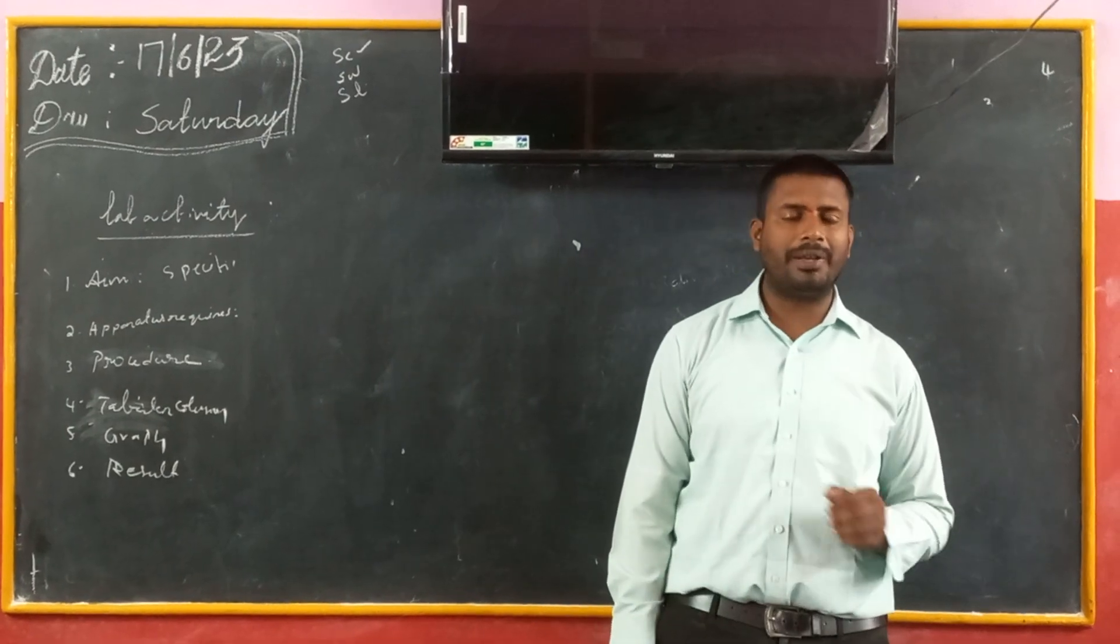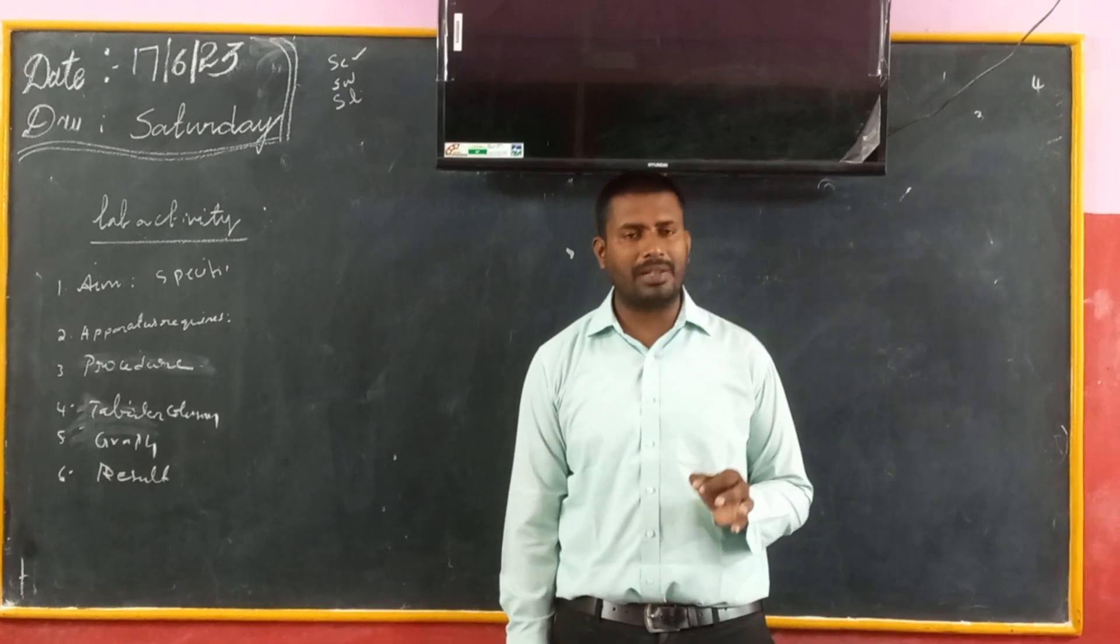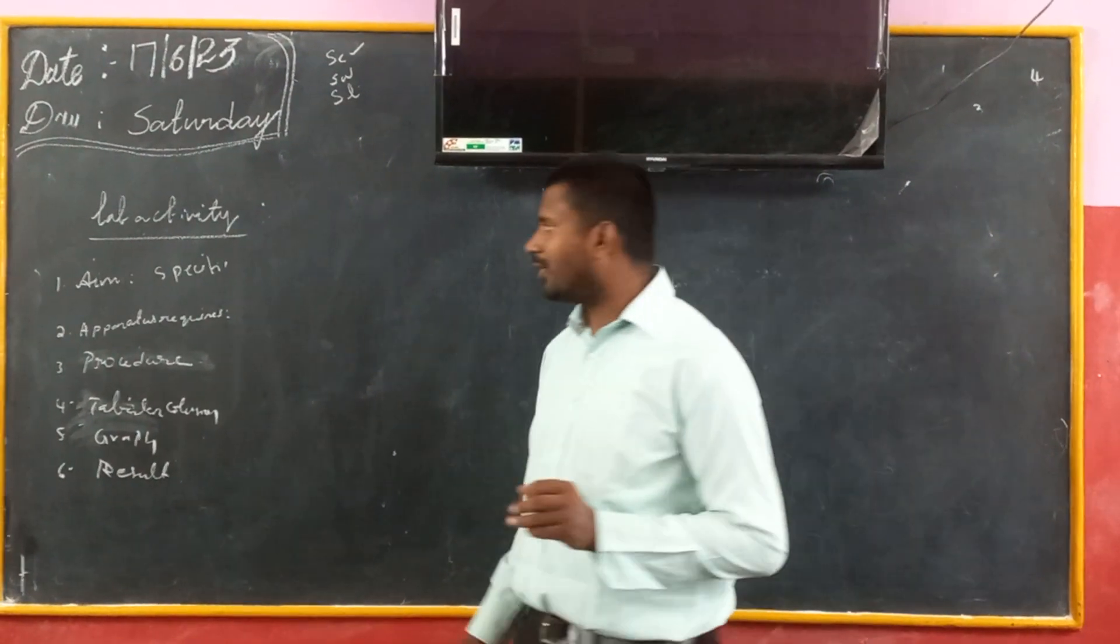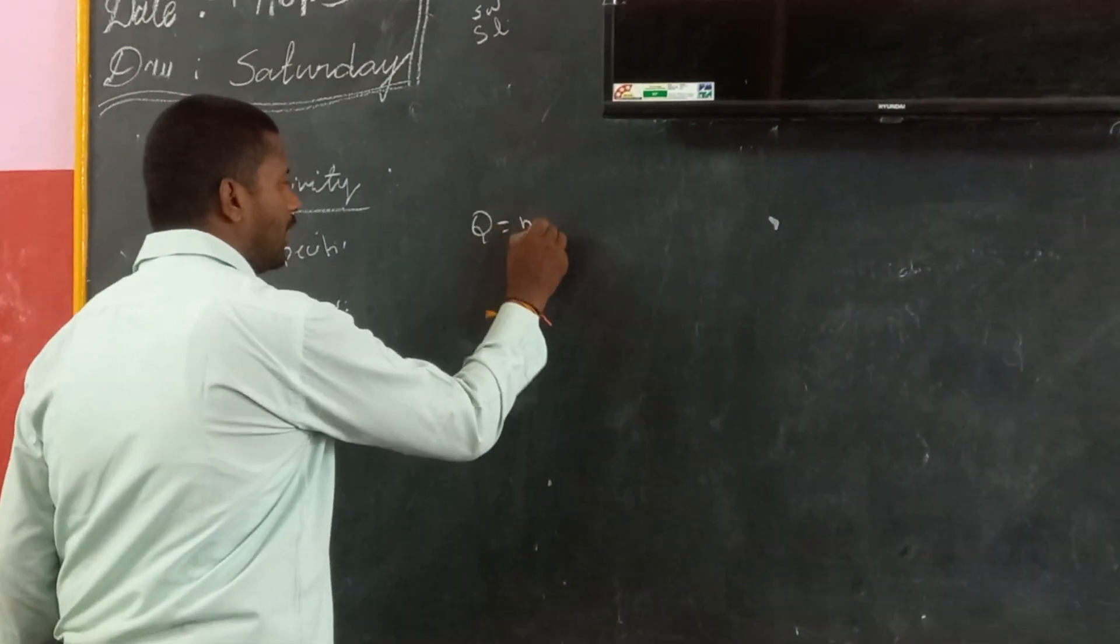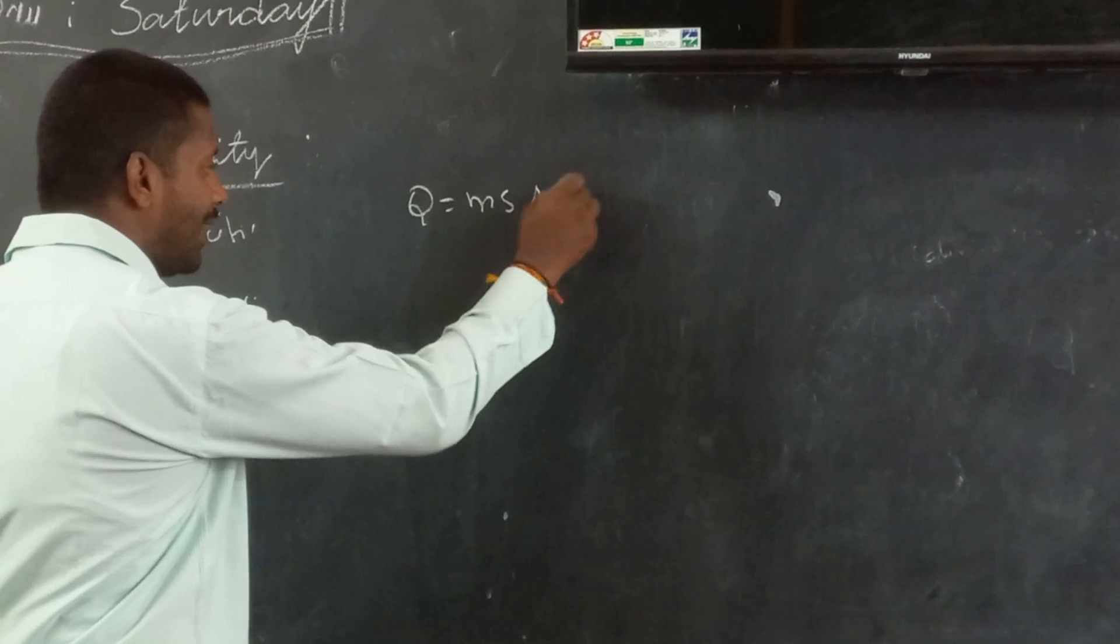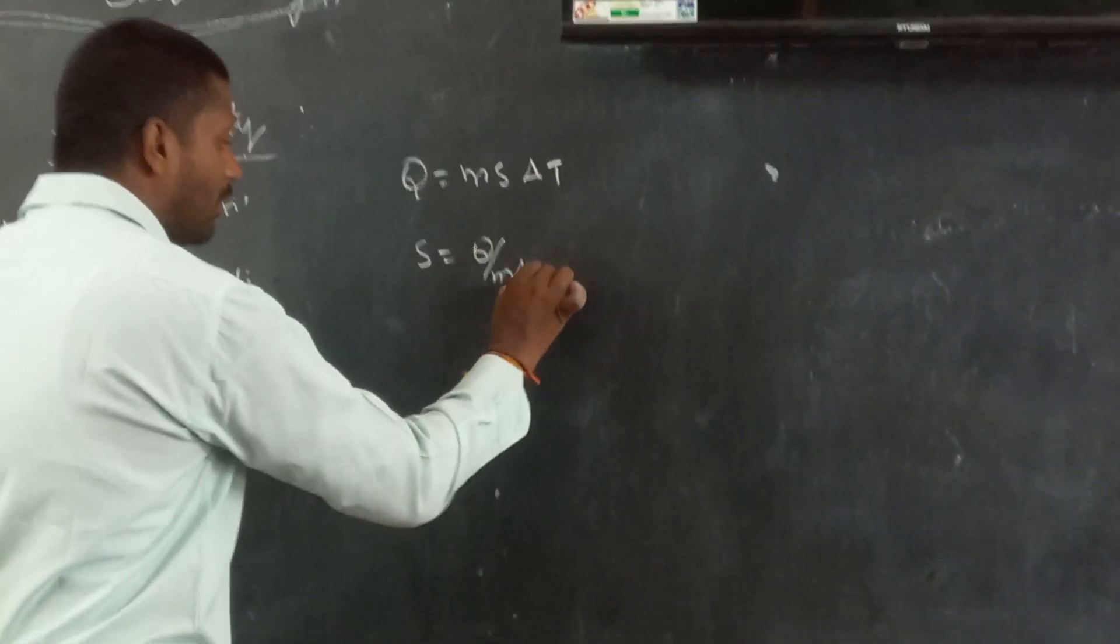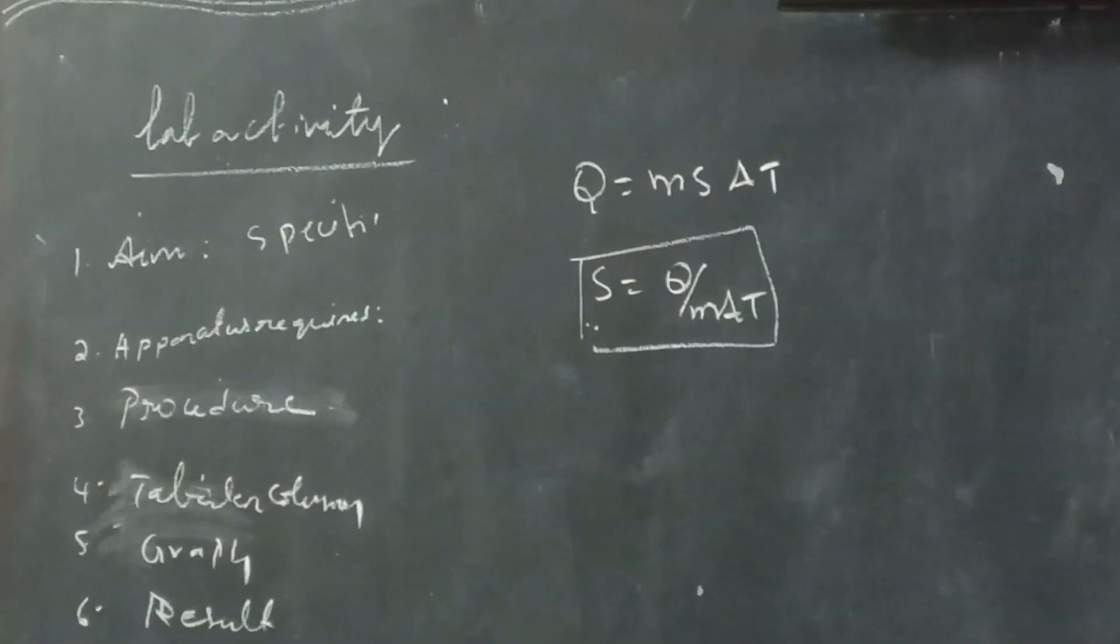First of all, what do you mean by specific heat? The amount of heat required to raise the temperature of unit mass of a substance by 1 degree Celsius is called specific heat. Q equals to MS delta T is the equation of heat. Q equals to M by delta T is the equation of specific heat. In this class we are going to find out specific heat.